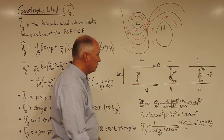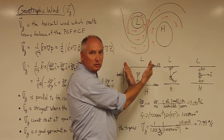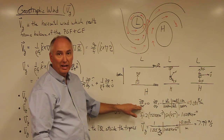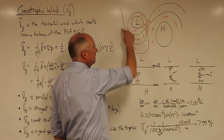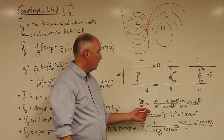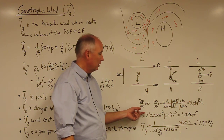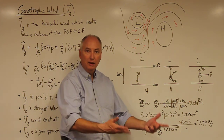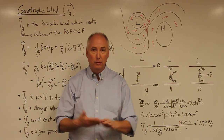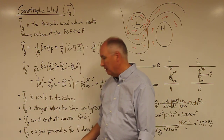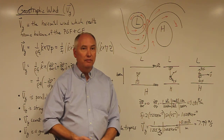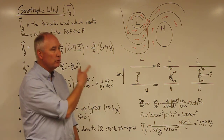In a situation with isobars oriented north-south, partial p over partial y would be zero and partial p over partial x would be nonzero. In the real world, isobars take all sorts of configurations, so both partial p over partial x and partial p over partial y are generally nonzero. The geostrophic wind is a great approximation for wind speeds above the planetary boundary layer, where friction is not an important component of the force balance.